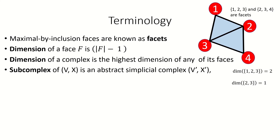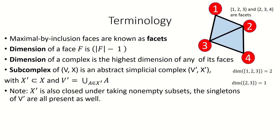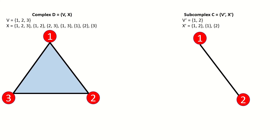A subcomplex of a complex (V, X) is an abstract simplicial complex (V', X'), where X' is a subset of X and V' is the union of all sets in X'. Basically, we form a subcomplex by selecting some of the faces present in the parent complex, and whatever vertices happen to be in those faces become the vertex set of our subcomplex. Note that because we require the subcomplex to be an abstract simplicial complex itself, X' must be closed under the operation of taking subsets. For example, complex C on the right is a subcomplex of D on the left because the faces {1}, {2}, and {1,2} are all faces of D and are closed under taking non-empty subsets.